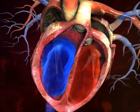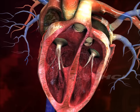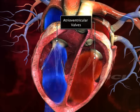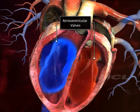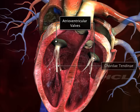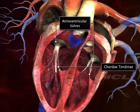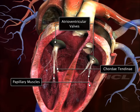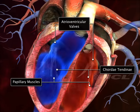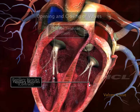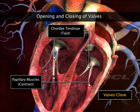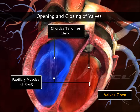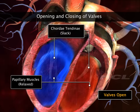The leaflets of these atrioventricular valves are connected to fibrous tissue called the chordae tendineae, which in turn are attached to papillary muscles. Contraction and relaxation of these muscles make the valves open and close.